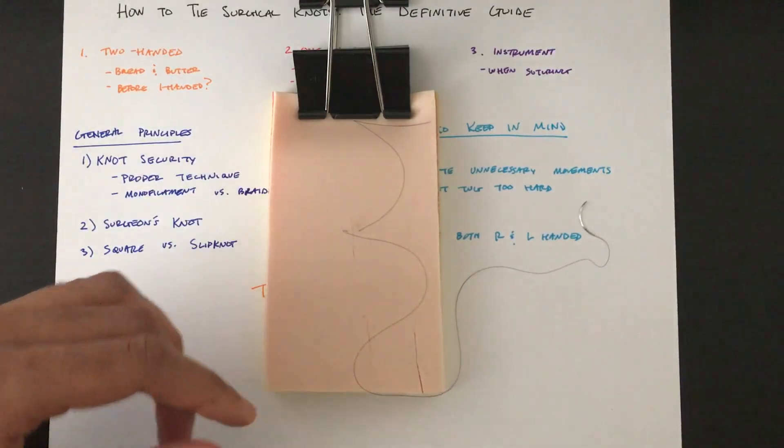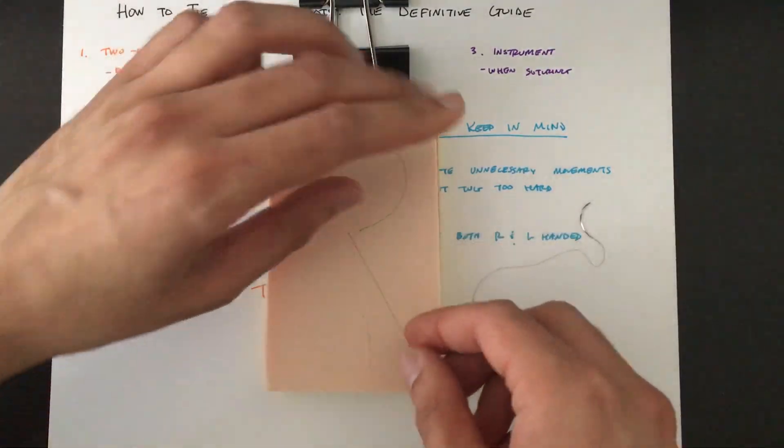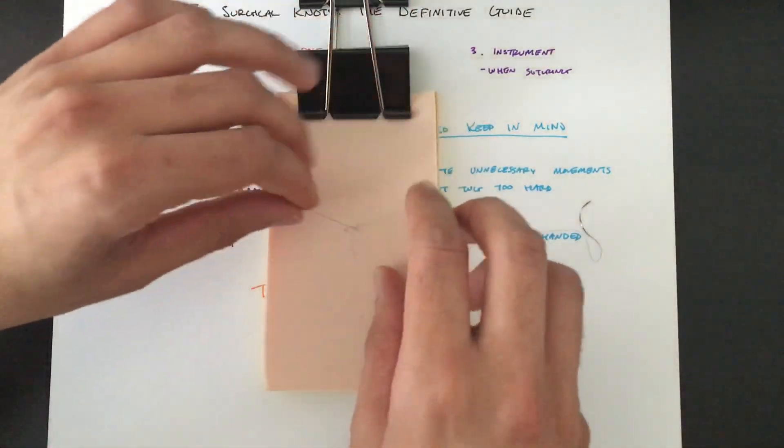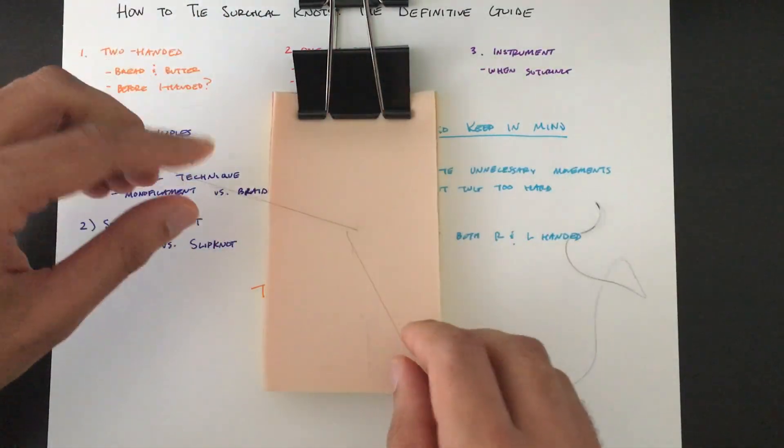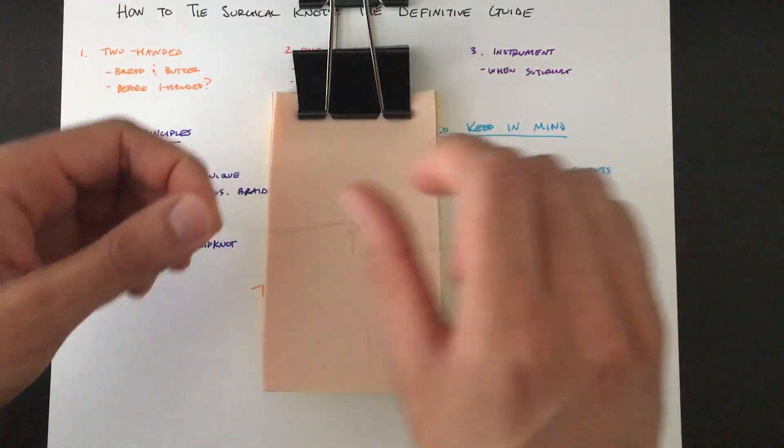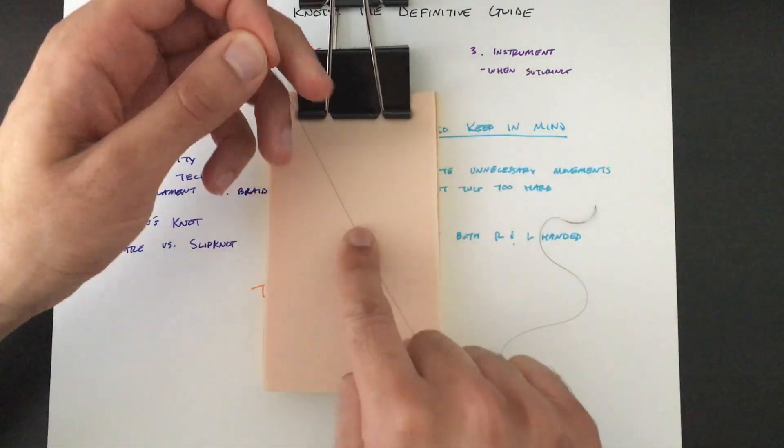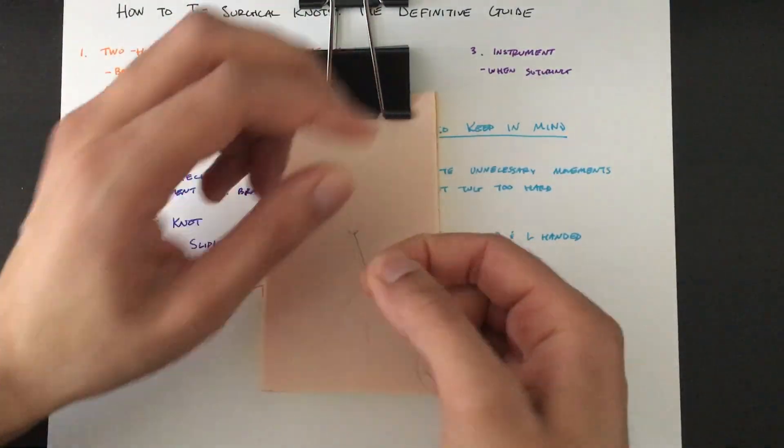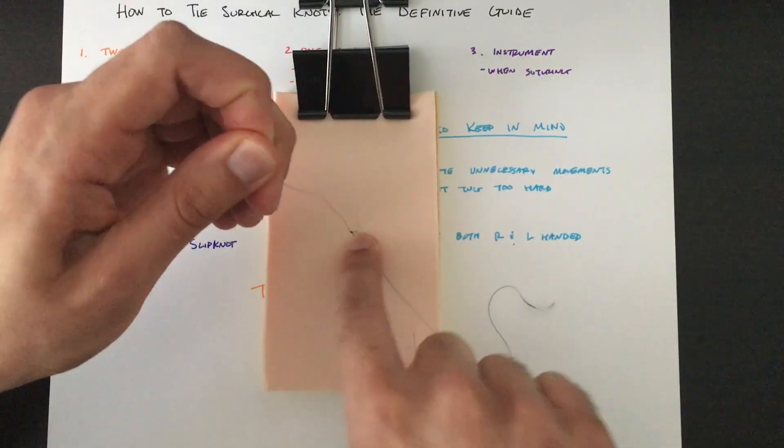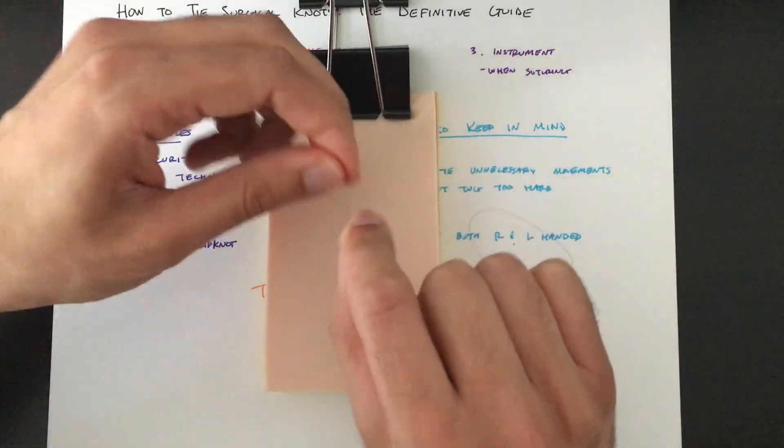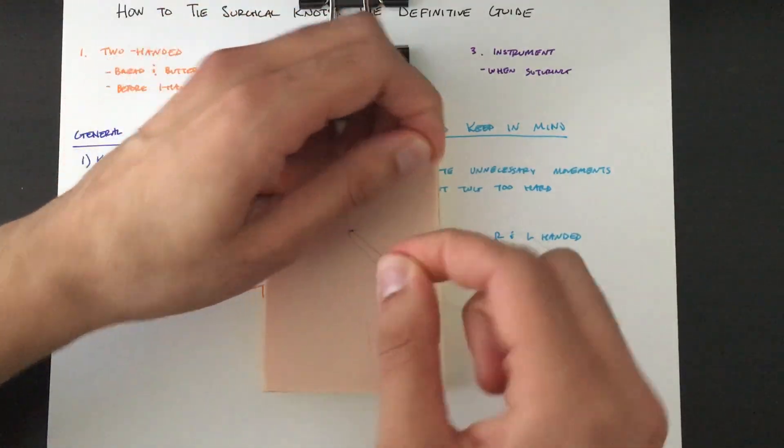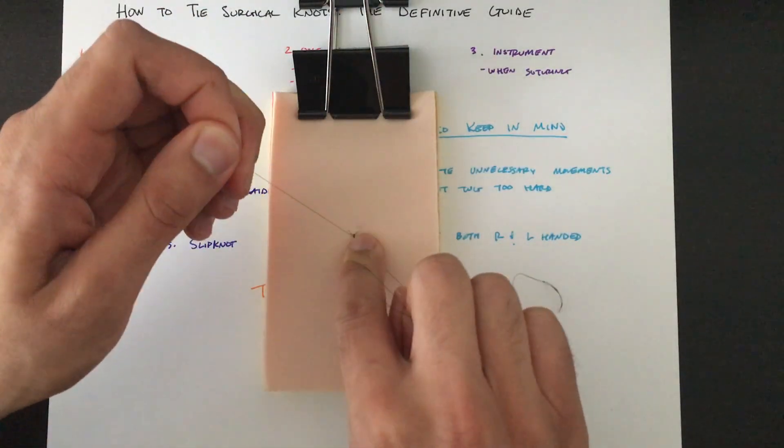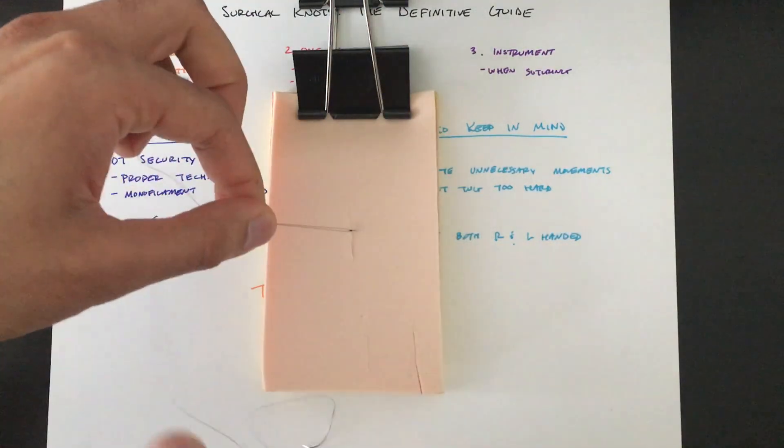Alright guys, so this is the suturing kit that I use to practice. Let me show you what it would actually look like as if you were suturing on skin. So let's do a two-handed knot. So I'm going to criss-cross like so. And there you go.